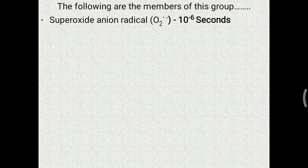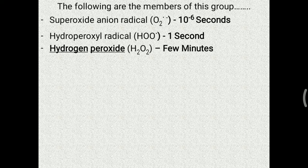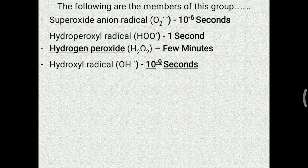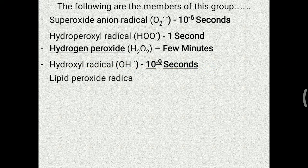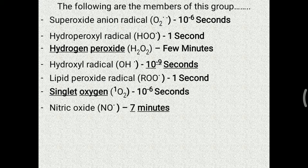The members of the reactive oxygen species group include: superoxide anion radical with a half-life of 10⁻⁶ seconds; hydroperoxyl radical with a half-life of one second; hydrogen peroxide with a half-life of a few minutes (not always considered a free radical); and hydroxyl radical, the most important, with a very short half-life of 10⁻⁹ seconds. Lipid peroxide radical has a one-second half-life, and singlet oxygen has a half-life of 10⁻⁶ seconds.